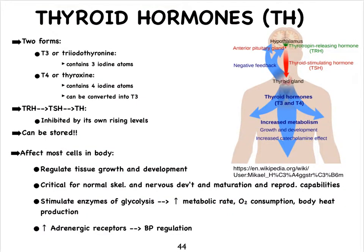There are two forms of thyroid hormone called T3 and T4, and the 3 and the 4 reflect how many iodine atoms are present in the hormone — either 3 or 4. T4 can actually be converted to T3 by the removal of one of the iodine groups. T4 is also often referred to as thyroxine.